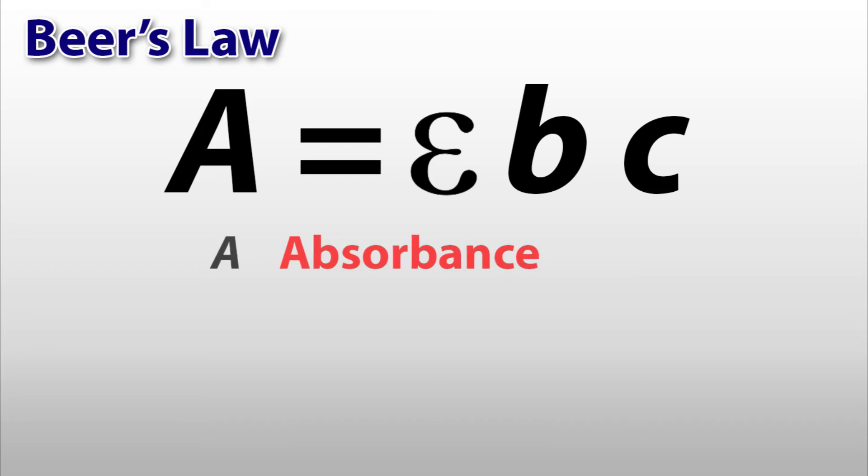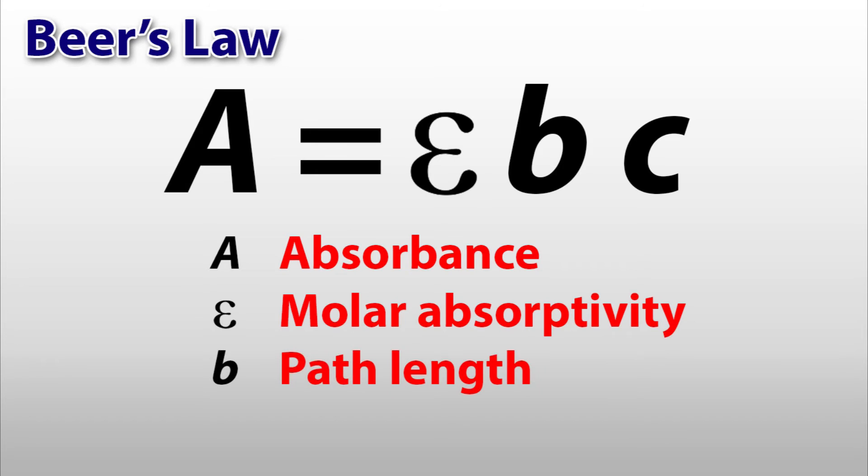Let's define the variables. A is for absorbance, related to the amount of light absorbed. Epsilon is the molar absorptivity, related to the efficiency of a substance to absorb light. B is the path length of the light or distance the light must go through. And C is the concentration.